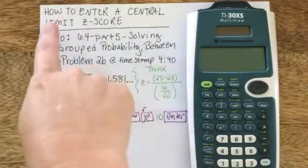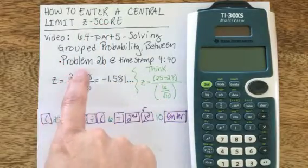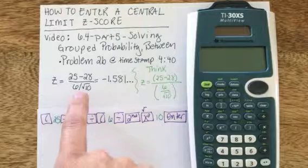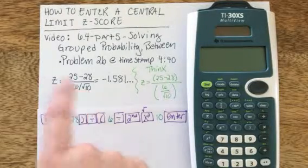Now I'm going to show you how to enter a central limit z-score, which is basically a z-score of data value minus the mean over the standard deviation. But the standard deviation is based on a sample size, so it's a little bit more complicated.